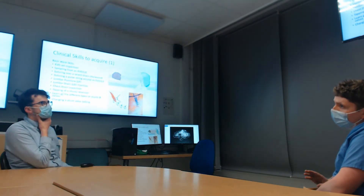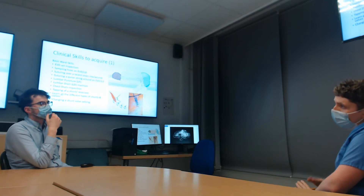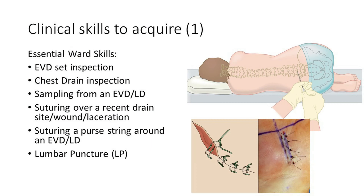Other things to learn on the ward include EVD set inspection — how to inspect it, how to drop it to the floor, what different readings mean. Reference points are mostly to the tragus, though they can change. For lumbar drains it can vary by trust. You also need to learn how to suture over a recent drain site or wound, and particularly how to purse-string around an EVD or lumbar drain if it's leaking to seal that leak off.